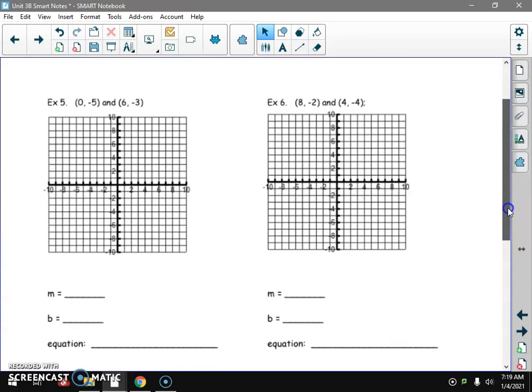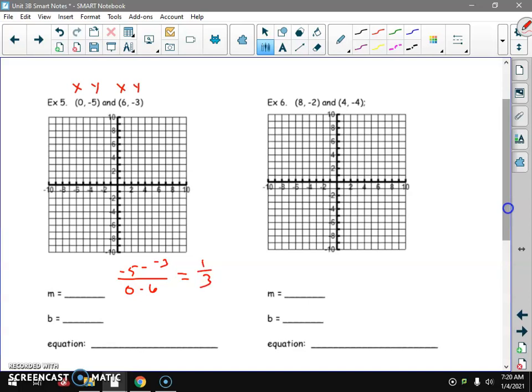We got two more points. We did it before. We can plot it if we want to, we don't have to. We can label these X, Y, X, Y. Let's find M. Negative 5 minus negative 3 over 0 minus 6. Use our calculator. I get 1 over 3.